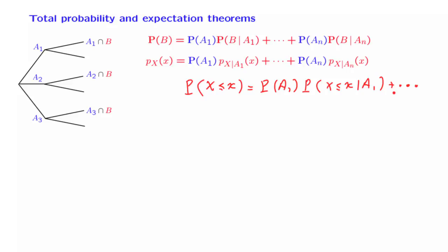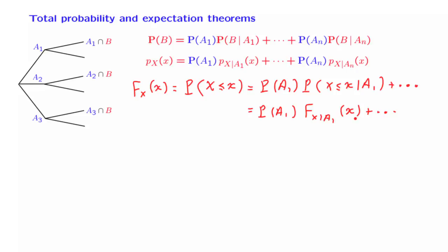Let us now turn this equation into CDF notation. The left-hand side is what we have defined as the CDF of the random variable x. On the right-hand side, what we have is the probability of the first scenario multiplied by a CDF of the random variable x, but it is a CDF that applies in a conditional model where event A1 has occurred. So we use this notation to denote the conditional CDF — the CDF that applies to the conditional universe — and then we have similar terms for the other scenarios.